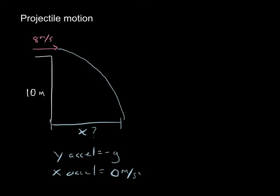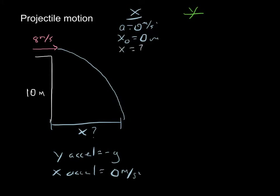To solve a projectile motion problem, we separate everything into its two components: x direction and y direction. In the x direction, acceleration equals zero meters per second squared. My initial x position is zero meters. I'm looking for the final x position — how far away it lands — and I also don't know the time. My initial velocity in the x direction is 8 meters per second.